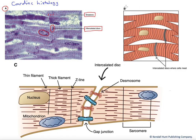In panel B over here, we have a cartoon version of what we saw in A. It's just pointing out more simplistically the presence of those striations, indicating the presence of the sarcomeres, and then our intercalated discs where the cells join one another. If we blow that up over here in C,